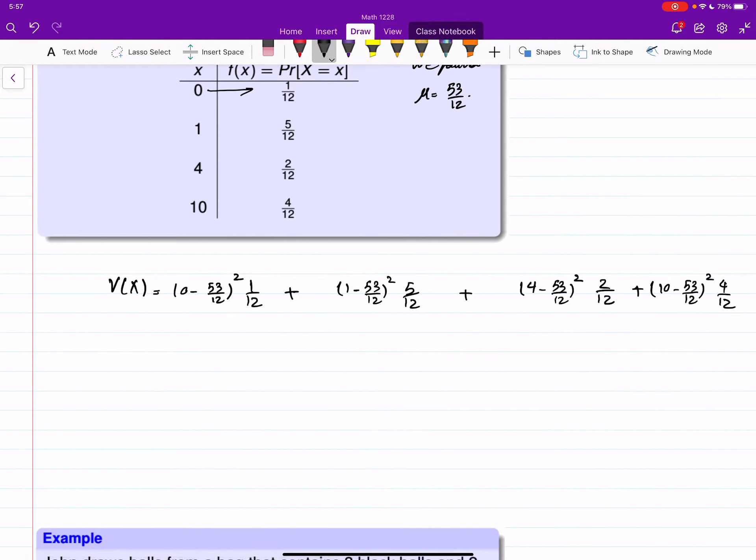For this one, 0 minus μ, we multiply it by 1 over 12. The other one we multiply by 5 over 12, this one by 2 over 12, and then another 4 over 12, then add these guys. This one is negative 53 over 12, square it—when you square the negative sign disappears—times 1 over 12. 1 minus 53 over 12 is negative 41 over 12, squared times 5 over 12.